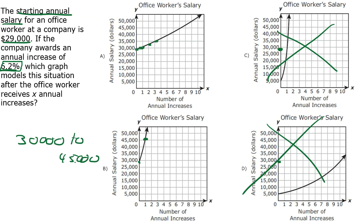We're just roughly guessing here. That's a $15,000 increase, which is half again as much as the starting amount. That's almost a 50% increase. That's way more than 6.2%, so it can't be answer choice B.